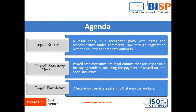A payroll statutory unit consists of legal entities that are responsible for paying workers, including the payment of payroll tax and social insurance. A payroll statutory unit can pay and report on the payroll tax on behalf of one or more legal entities, depending upon the structure of your enterprise. It performs the payroll-related tasks for the employer. A legal employer is a legal entity that employs the workers — that hires the workers. So let's move on to the application and see how to create a legal address and legal entity.